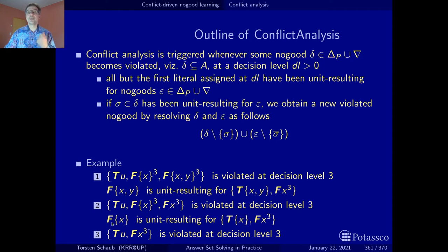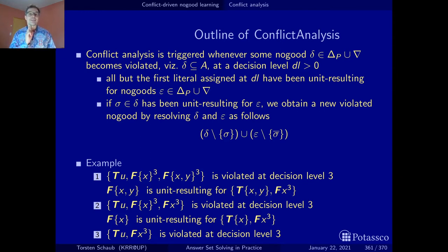This no-good now has a unique implication point — a single literal from the current decision level, from decision level 3. So here we stop. We found what we are looking for: a conflict no-good that has a single literal left from the current decision level where the conflict occurred.